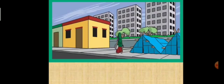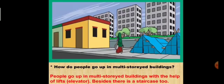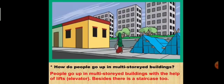Now, in your textbook, one question is given. So let's see. How do people go up in multi-storied buildings? So answer is, people go up in multi-storied buildings with the help of lifts. Besides, there is a staircase too. So you have to write in your textbook.